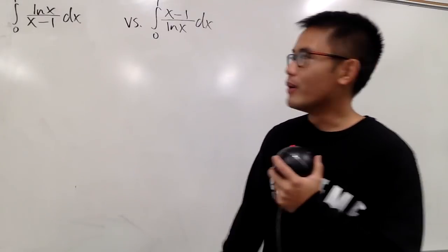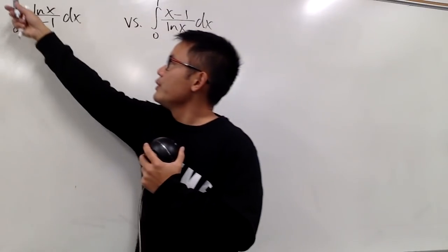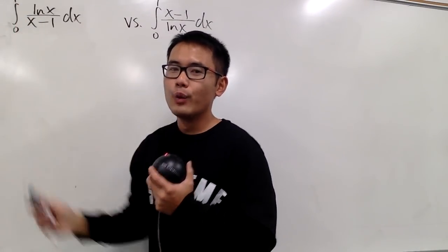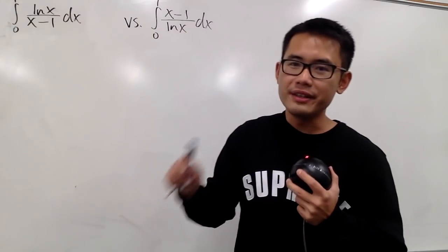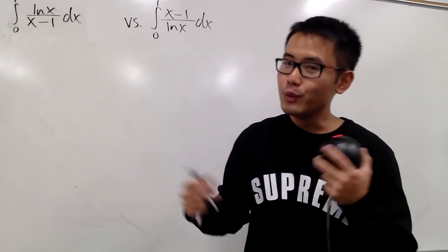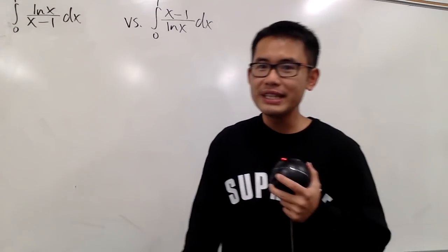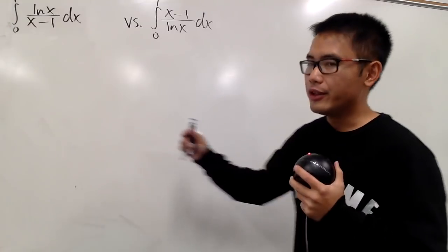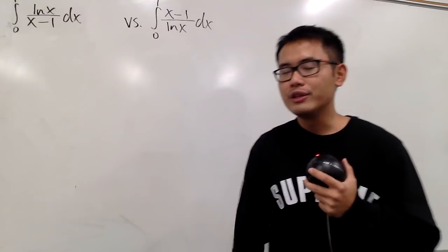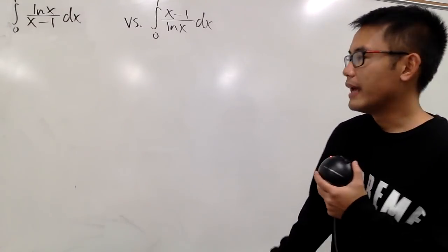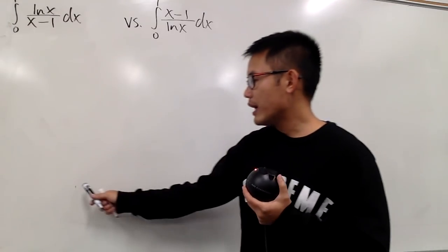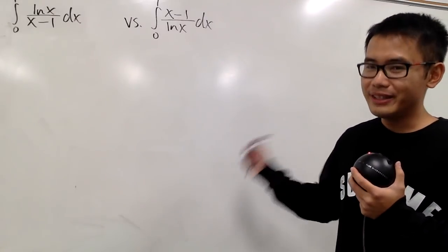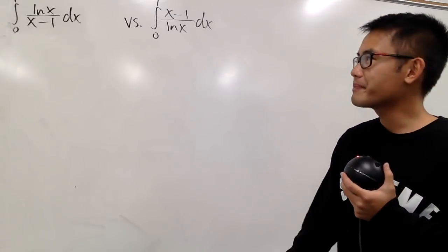For the second one, we just have the reciprocal: x-1 over ln(x). You may be wondering if they even converge in the first place, because they look so improper. For example, if you put in 1 for x, we have 1-1, which is a zero in the denominator. However, they do converge, so we will end up with nice answers for both integrals.